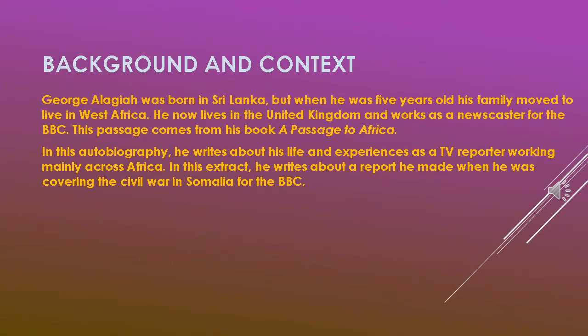George Alagiah, the writer, was born in a place called Sri Lanka, but when he was five years old his family moved to live in West Africa. He now lives in the United Kingdom and works as a newscaster for the BBC. This passage comes from his book titled 'A Passage to Africa.' In this autobiography he writes about his life and experiences as a TV reporter working mainly across Africa. In this extract, he writes about a report that he made when he was covering the civil war in Somalia for the BBC.